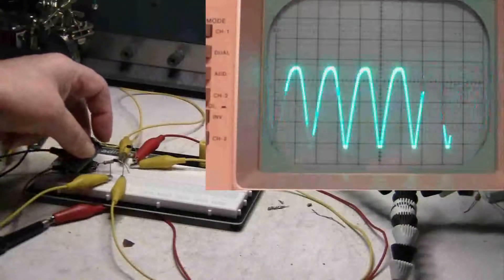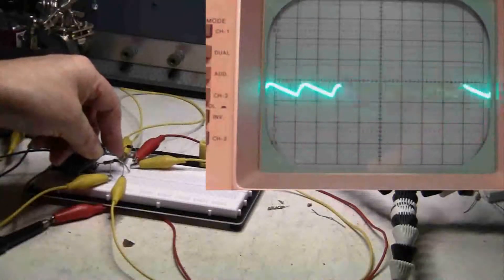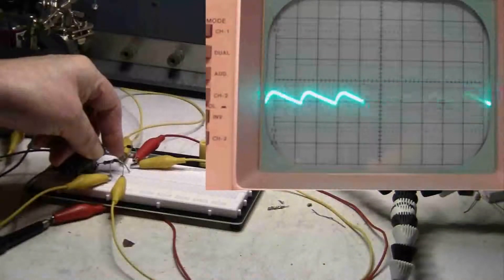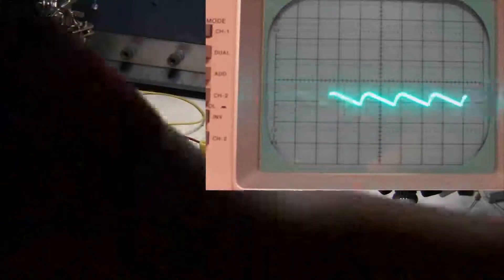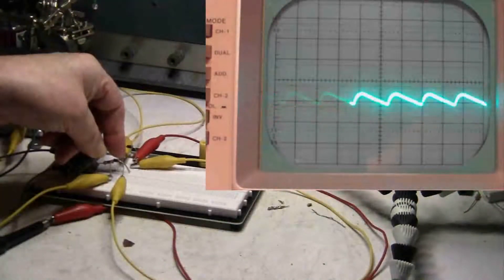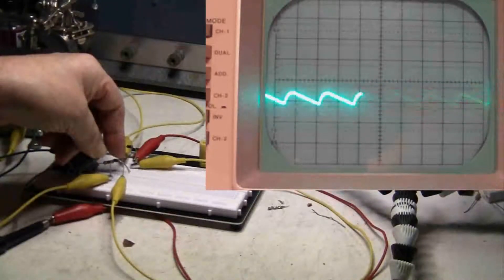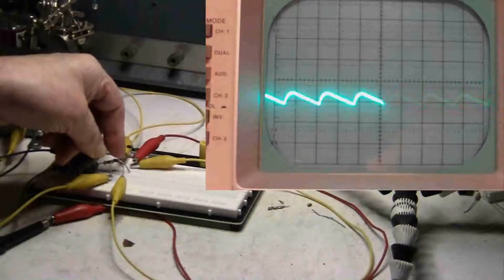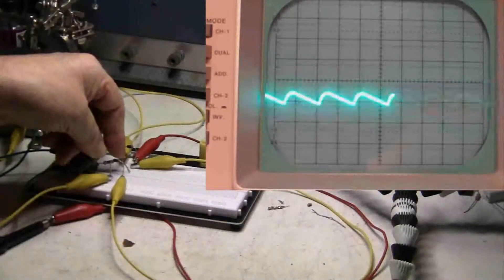Now I'm going to hook up the 47 microfarad capacitor. You can see that the fill is a little higher and of course it's closer together. So that means that it's also easier to filter a full-wave rectifier.